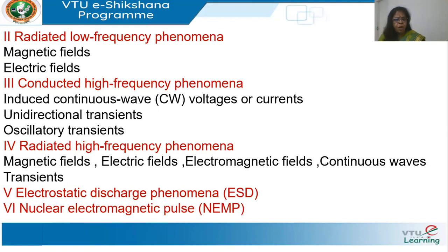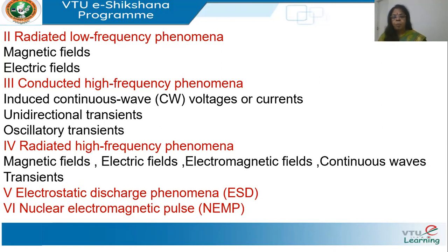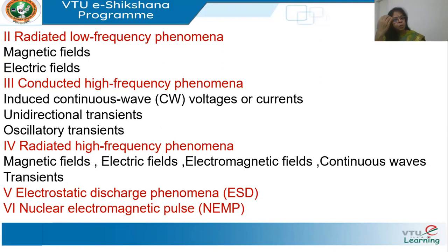Then we have conducted high-frequency phenomenon, due to induced continuous-wave voltages or currents at very high frequencies. Unidirectional transients — which we know from circuit theory as signals that die down — are normally caused by lightning: a sudden increase in current that then dies down. Oscillatory transients go up and down, having both positive and negative polarity, and are called transients because they eventually die down.